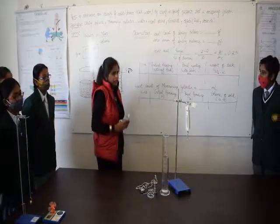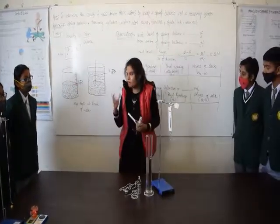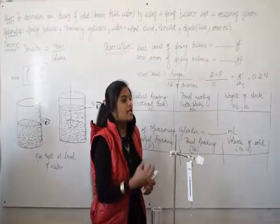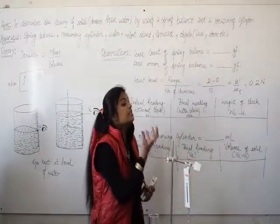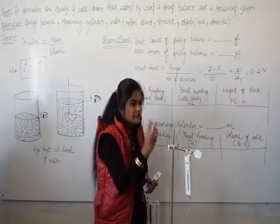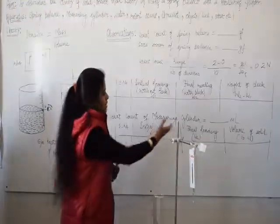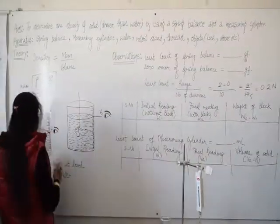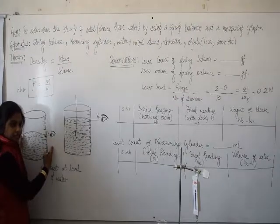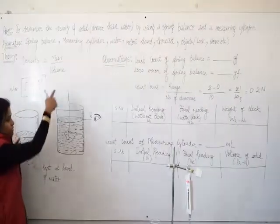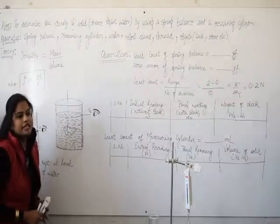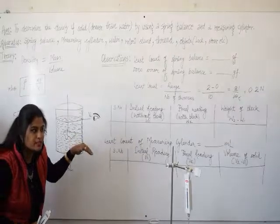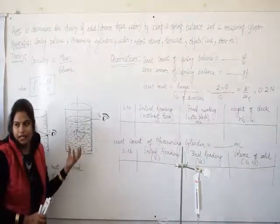Archimedes principle. Whenever an object is partially or wholly immersed in a liquid, it displaces equal volume equal to its weight's volume of the liquid. And then we can calculate the volume. We can see here volume of solid will be calculated at last.